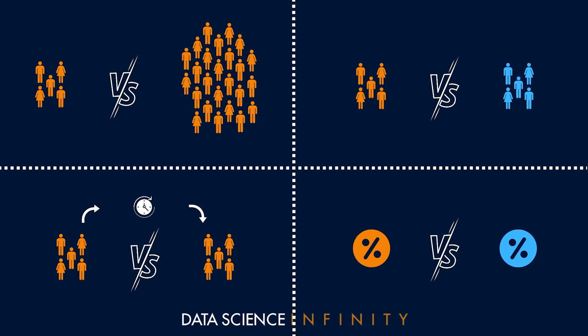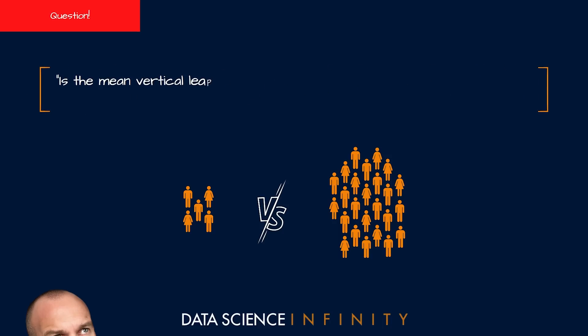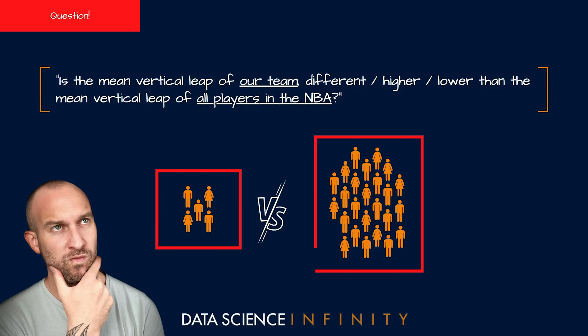In this video we are going to focus on this scenario and assess the question: is the mean vertical leap — so in other words how high a player can jump off the ground — of our team different, higher or lower than the mean vertical leap of all players in the NBA? To investigate this question, since we are comparing one sample (the players on our team) to the full population from which they come (all players in the NBA), the appropriate test is the one sample t-test.